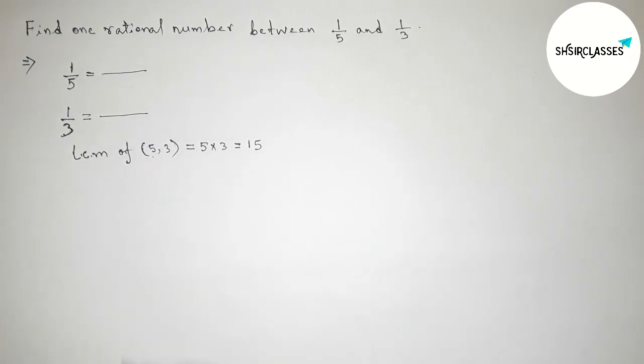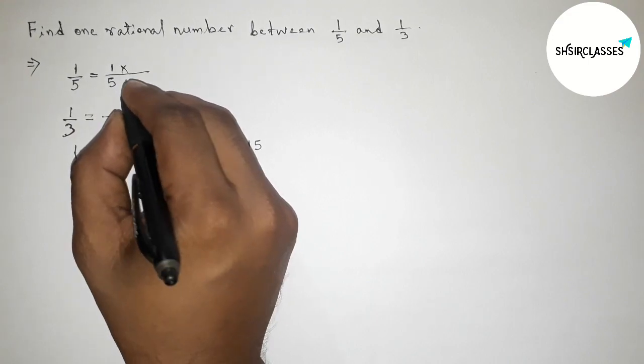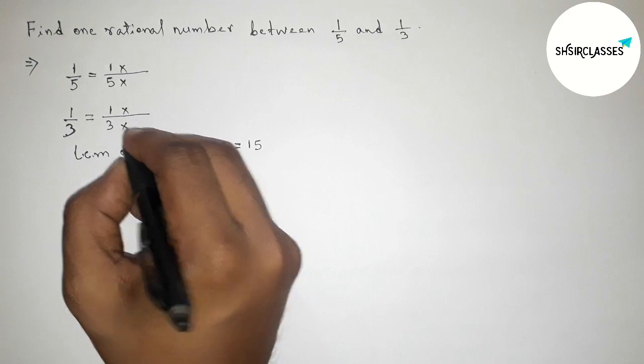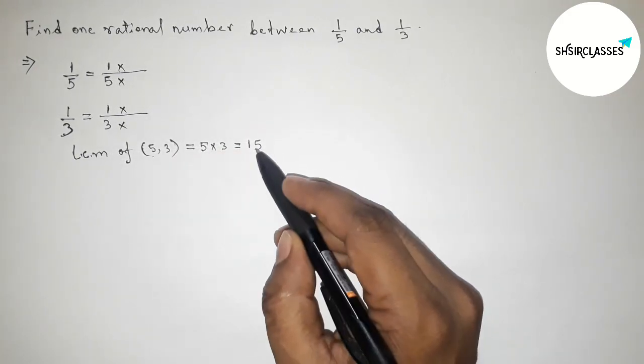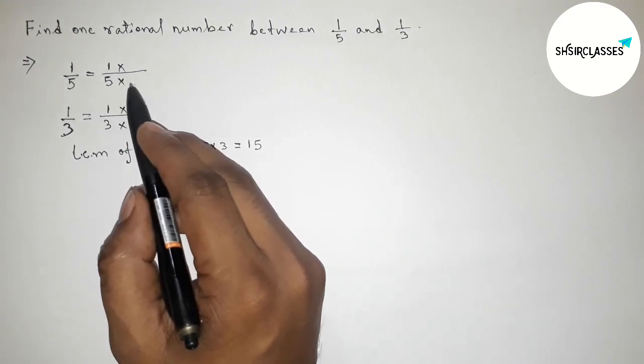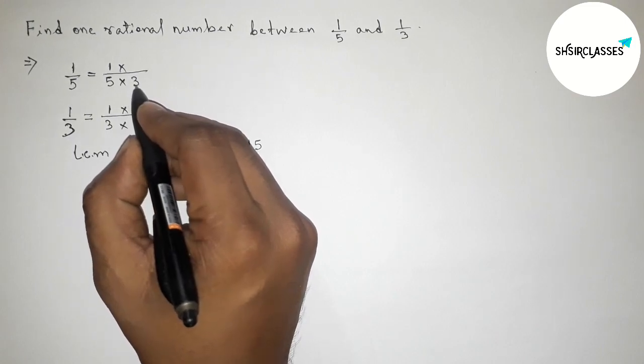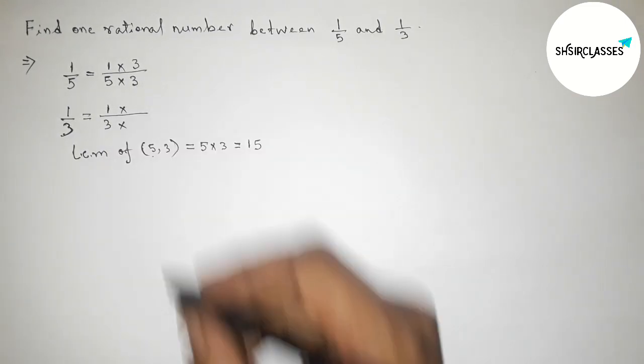First write 1/5 and taking multiplication up and down, and taking 1/3 and multiplying by this way. For first making 15 we have to take here 5,3, so taking here 3. So we have to multiply up and down by 3 by this way.